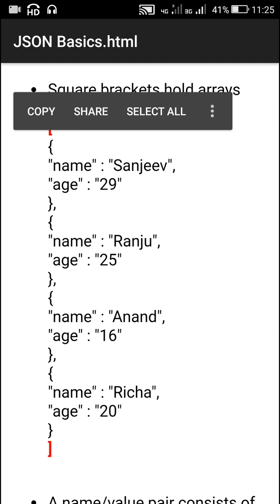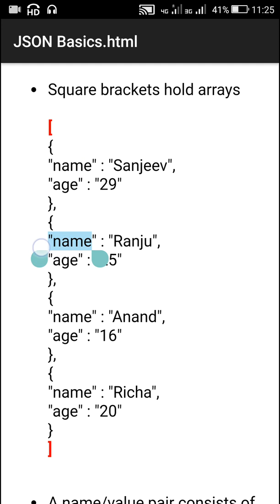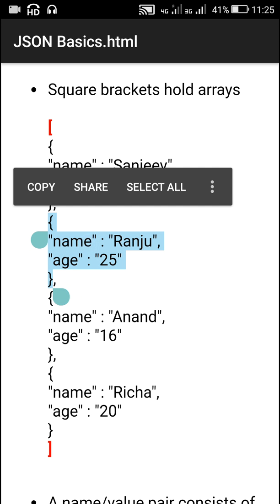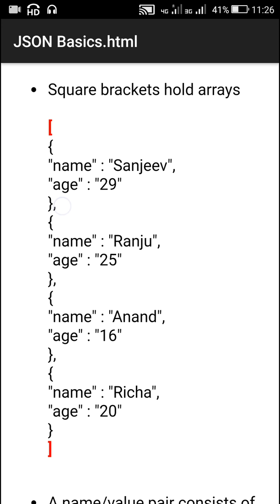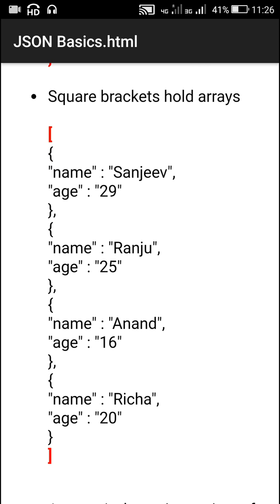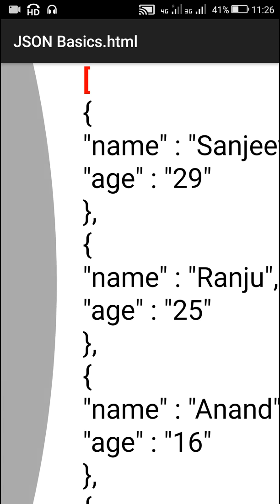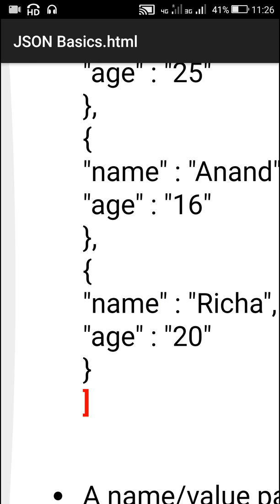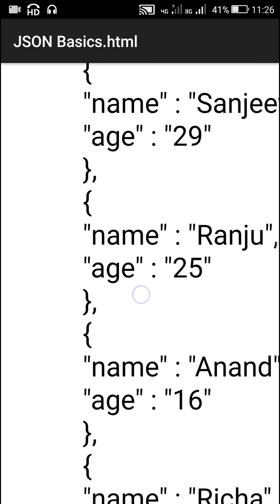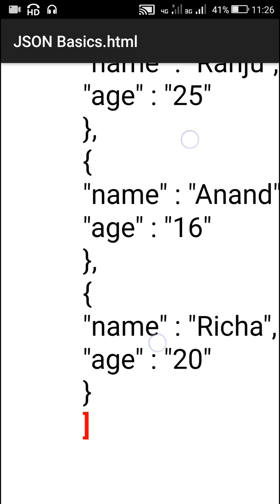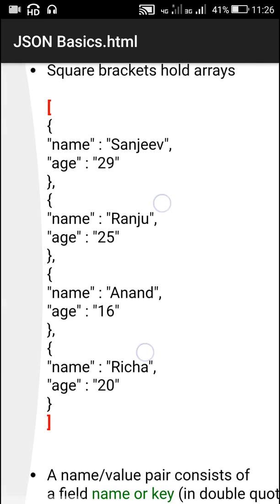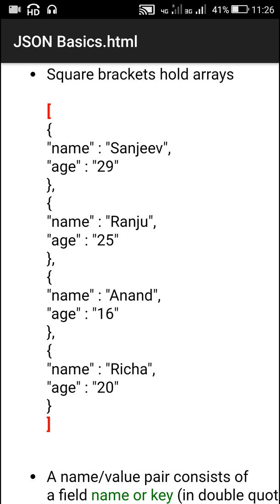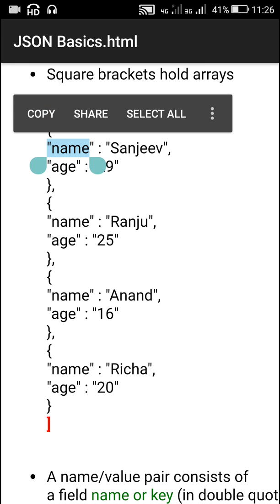This is one JSON object which contains two data items with keys name and age. This is another JSON object with the same keys, name and age. Each JSON object is separated by a comma. The square brackets contain four different JSON objects — an array of objects separated by commas — and each object contains two data items with keys name and age.